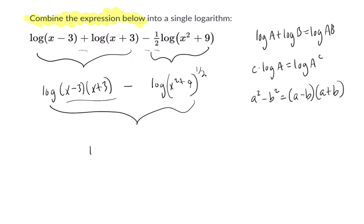And right here, we're going to get the log of x squared minus 9. That's our numerator. And then I want to divide that by the square root of x squared plus 9. Why did I do that?